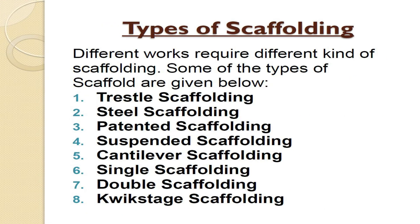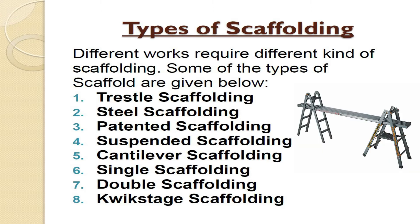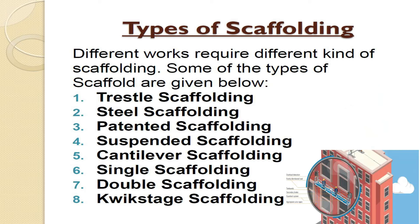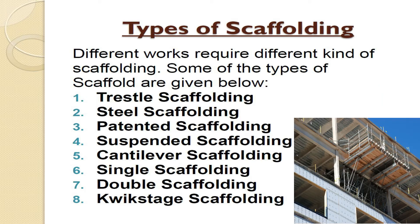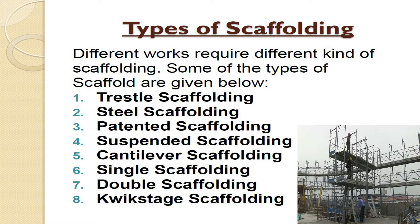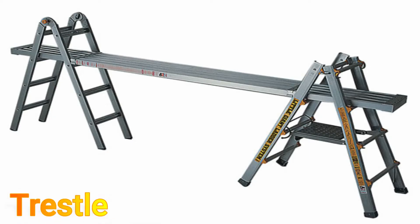Types of scaffolding: Different works require different kinds of scaffolding. Some of the types are: trestle scaffolding, steel scaffolding, patented scaffolding, suspended scaffolding, cantilever scaffolding, single scaffolding, double scaffolding, and quickstitch scaffolding.